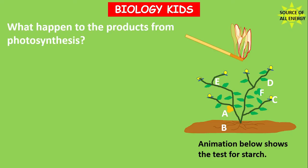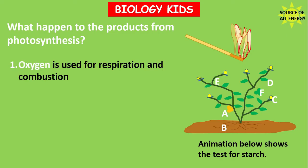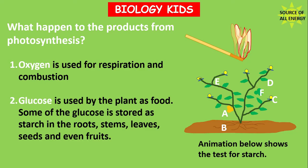What happens to the products of photosynthesis? The oxygen is used for respiration and combustion. The glucose is used by the plant as food, and some of the glucose is stored as starch in the root, stem, leaves, seed, and even in some fruits.